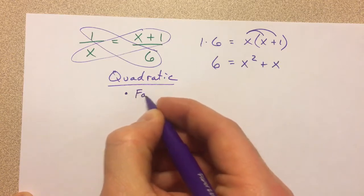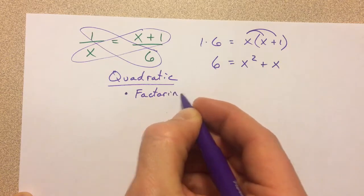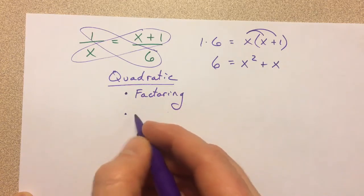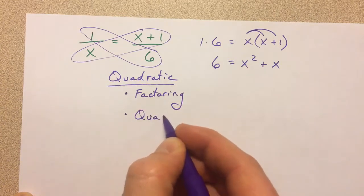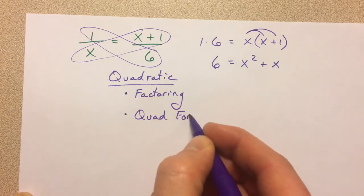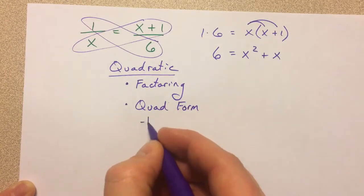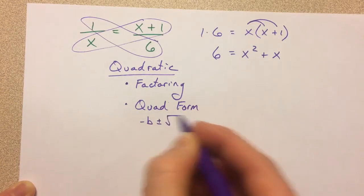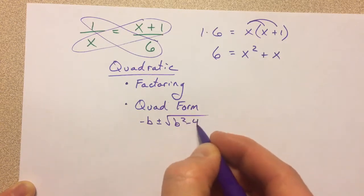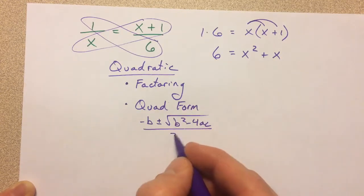First of which is factoring, and that's the one we're going to practice today. But a reminder that you can also use the quadratic formula. The quadratic formula is one that you learn typically in Algebra 1, and it's the negative b plus or minus the square root of b squared minus 4ac all over 2a.